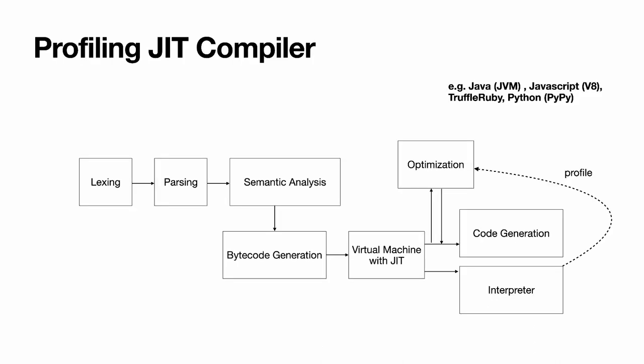Profile-guided optimizations happen in a few scenarios, the most common of which is a profiling just-in-time compiler. This is for the Java virtual machine which profiles during interpretation. We've seen this chart a bunch of times at this point so I won't comment further.